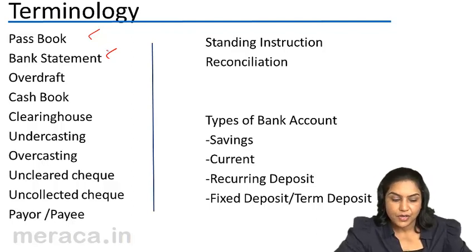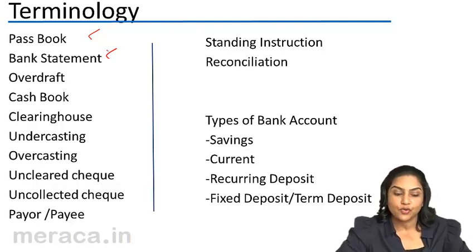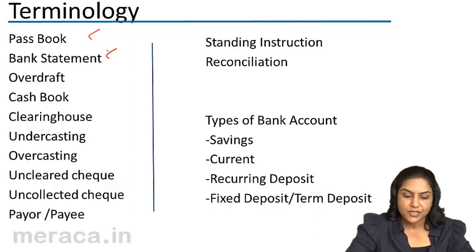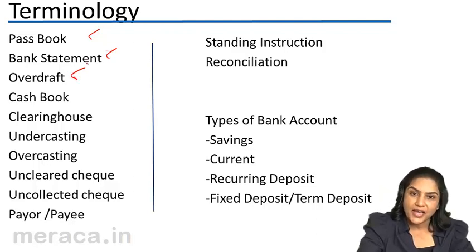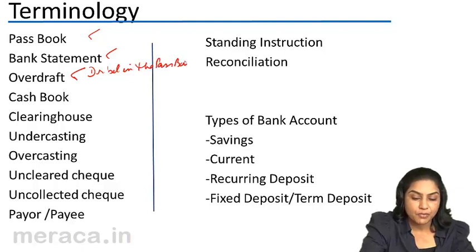What is an overdraft? When withdrawals are more than the deposits, there is a negative balance, an unfavorable balance, an overdrawn balance, and this is called an overdraft. It is represented by a debit balance in the passbook in the books of the bank, and a credit balance in the cashbook.